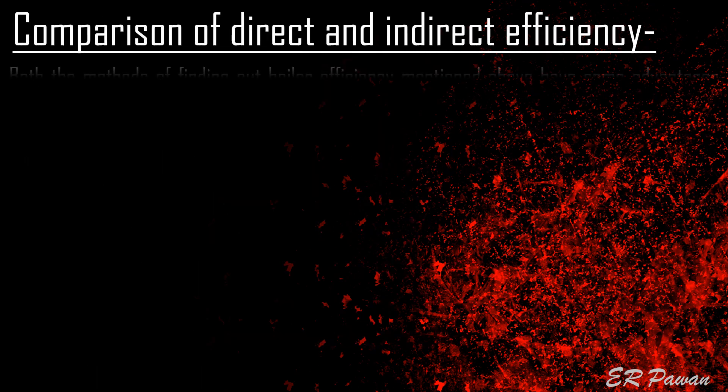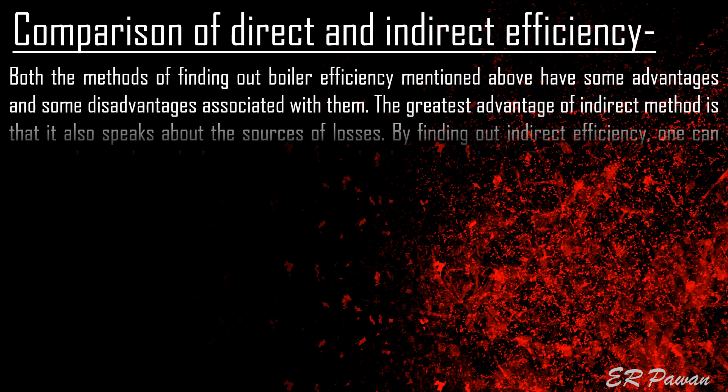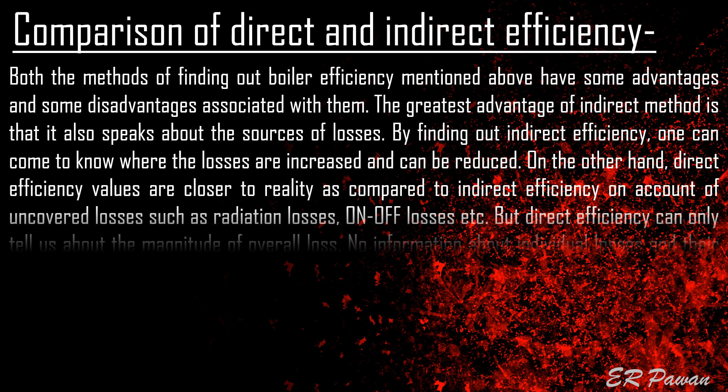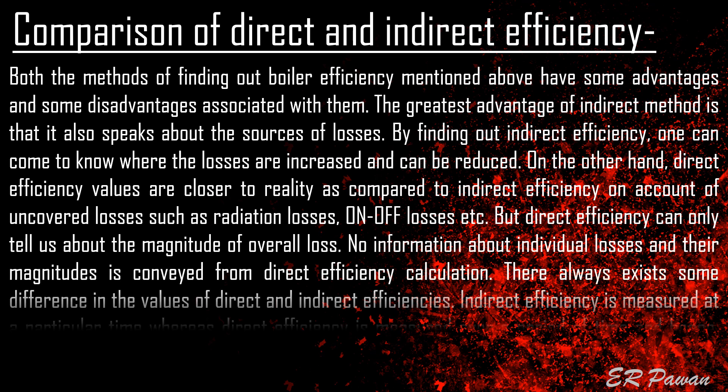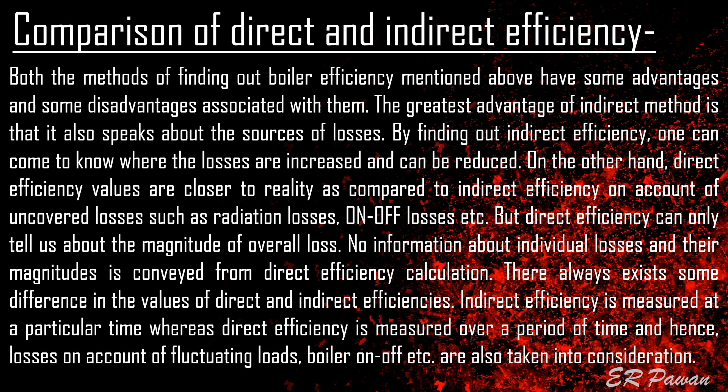Both methods of finding boiler efficiency have advantages and disadvantages. The greatest advantage of the indirect method is that it also identifies the sources of losses — one can know where losses are increased and can be reduced. On the other hand, direct efficiency values are closer to reality as they account for uncovered losses such as radiation losses and on-off losses, but direct efficiency can only tell us the magnitude of overall loss with no information about individual losses. Indirect efficiency is measured at a particular point in time, whereas direct efficiency is measured over a period of time, so losses due to fluctuating loads and boiler on-off cycling are also taken into consideration.